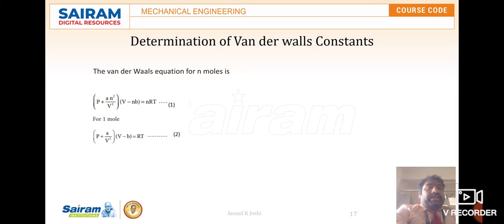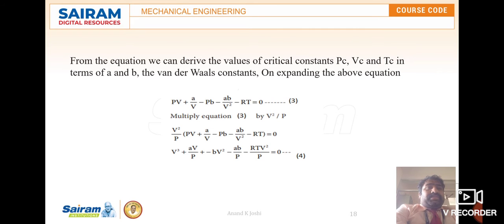Once we write this basic Van der Waals equation, the next step is to derive the values of critical constants Pc, Vc, and Tc in terms of the Van der Waals constants a and b. On expanding equation 2, we get: PV + a/V − Pb − ab/V² − RT = 0. This is equation number 3.